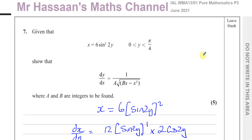Other questions from this P3 June 2021 paper can be found in the playlist. You should also find questions on differentiation of trig functions from P3 in general. You can link to the channel by clicking on the icon, where you'll find questions from P1, P2, P4, S1, M1, and IGCSE papers. The indexes are found in the link in the description. Thank you for watching and see you soon.